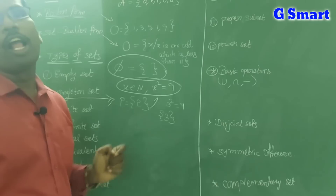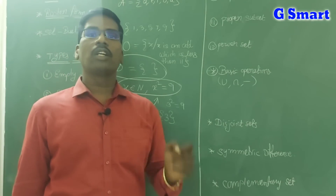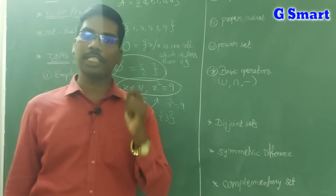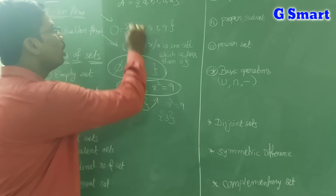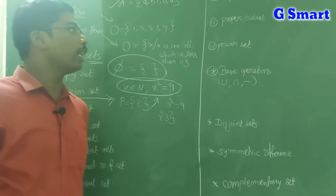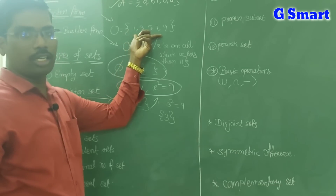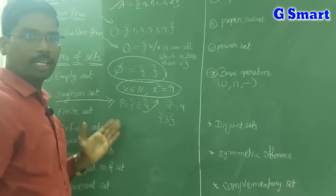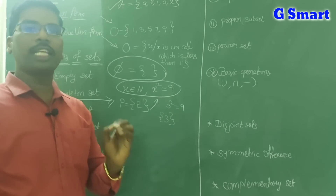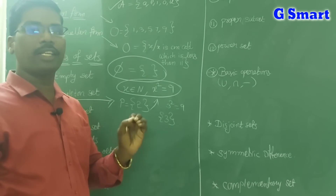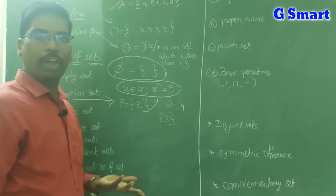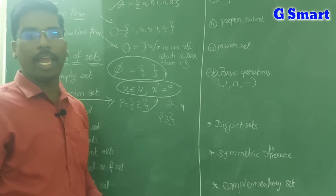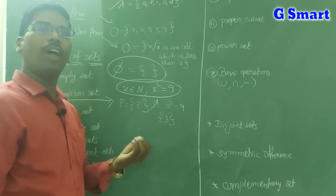Singleton set has only one element. Next is finite set — a set which has countable elements is called a finite set. Examples: vowels, consonants, and odd numbers less than 11. The numbers 1, 2, 3, 4, 5, 6, 7, 8, 9, 10 — up to 10 numbers — that is also a finite set. If you can count the elements, those form a finite set.